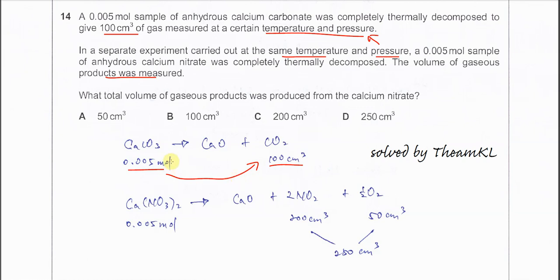Using the same comparison, we use it for the decomposition of calcium nitrate. Calcium nitrate will form two gases: NO₂ and O₂. We know that one mole of calcium nitrate will form two moles of NO₂ and half a mole of O₂.